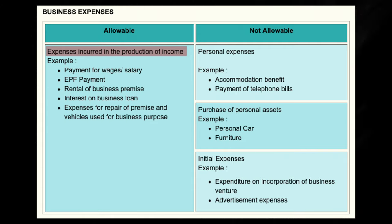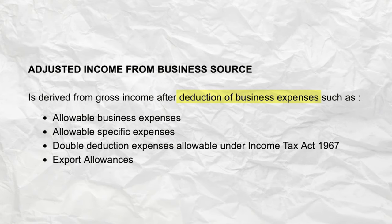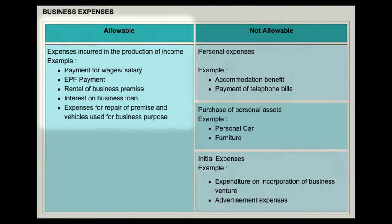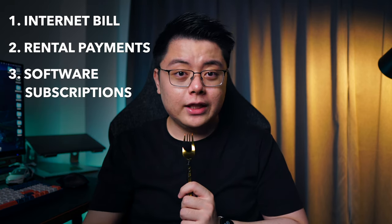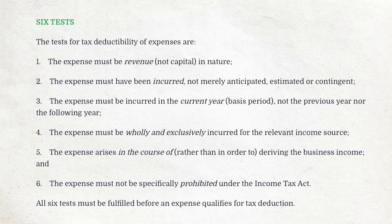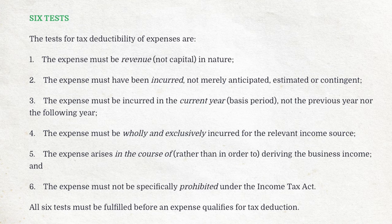The second key item is your expenses. Note that only expenses incurred in the production of your business income can be treated as business expenses, which can then be used to offset against your taxable income — which also means less tax. According to LHDN, some examples of allowable business expenses include payment for wages, salary, rental of business premises, interest on business loans, and expenses for repair and so on. For example, my YouTube channel business expenses can include internet bills, rental payments, video editing and music software subscriptions, business meals, business travel expenses, and video props. If I'm driving around to vlog for my YouTube channel, I can also claim that petrol mileage as a business expense. Depending on the nature of your business, your expenses may vary. Here are the six steps from that article which can hopefully help you decide if your expenses qualify as tax deductible.